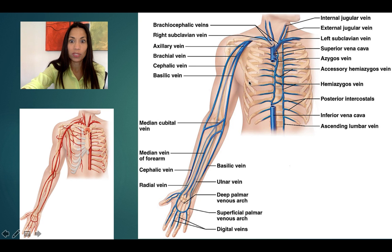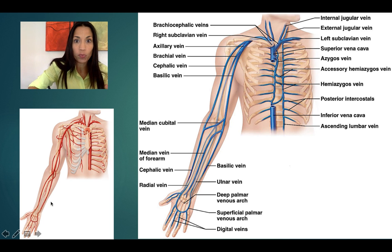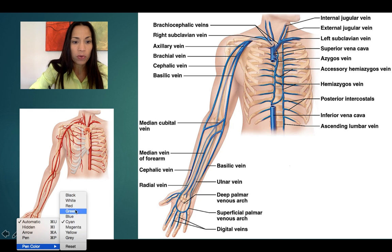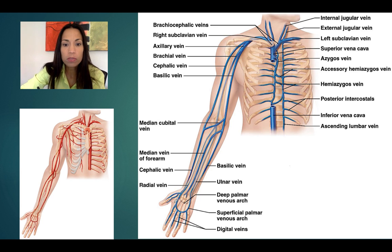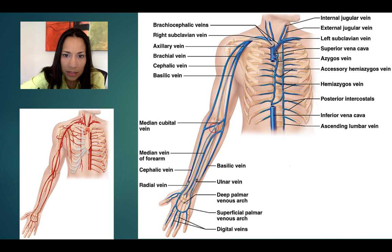Let's review this using the anatomical image, which shows that the deep veins have the same distribution as the arteries. Starting from distal to proximal, we can see the superficial and deep palmar venous arches. Following the lighter deep veins, here are the radial and the ulnar — they merge together and form the brachial vein.